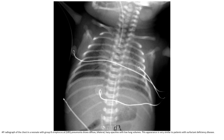Let's see the first case. This is the AP radiogram of the chest with group B strep pneumonia — diffuse bilateral hazy opacities, low lung volume. This appearance is very similar to patients with surfactant deficiency disease.